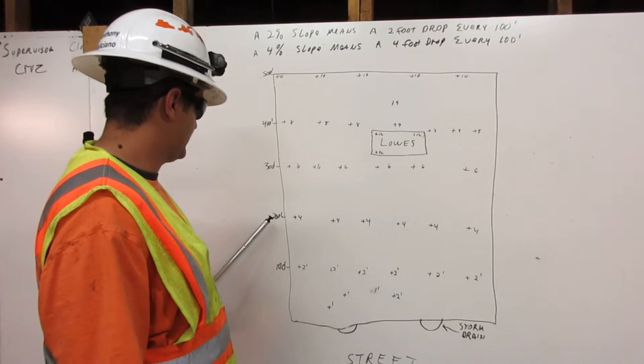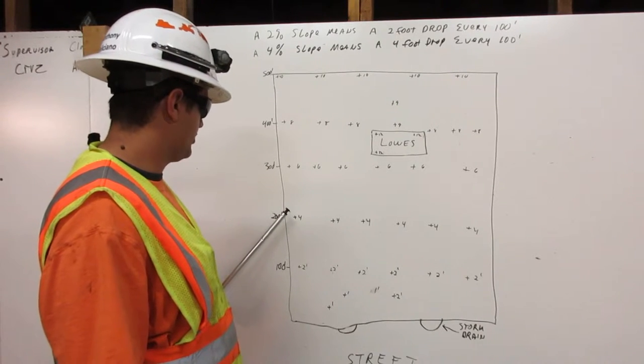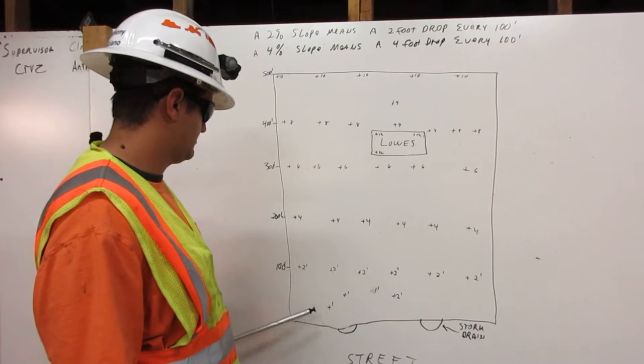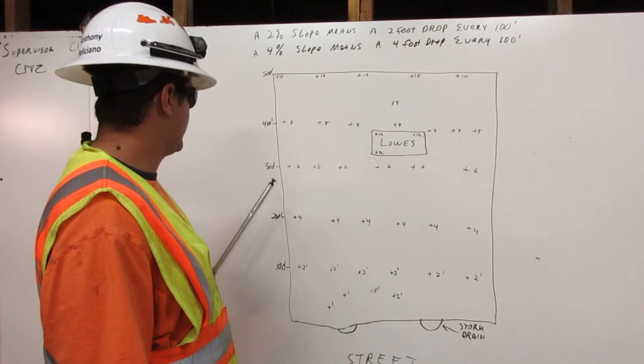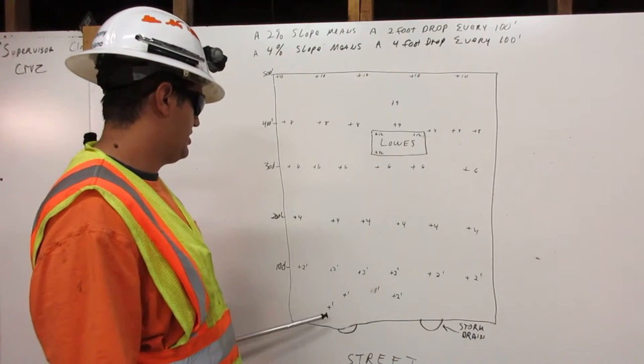Then we go back another 100 feet to the 200 feet mark. It is 4 feet higher than the storm drains. We go back to the 300 feet mark. It is 6 feet higher than the storm drains.